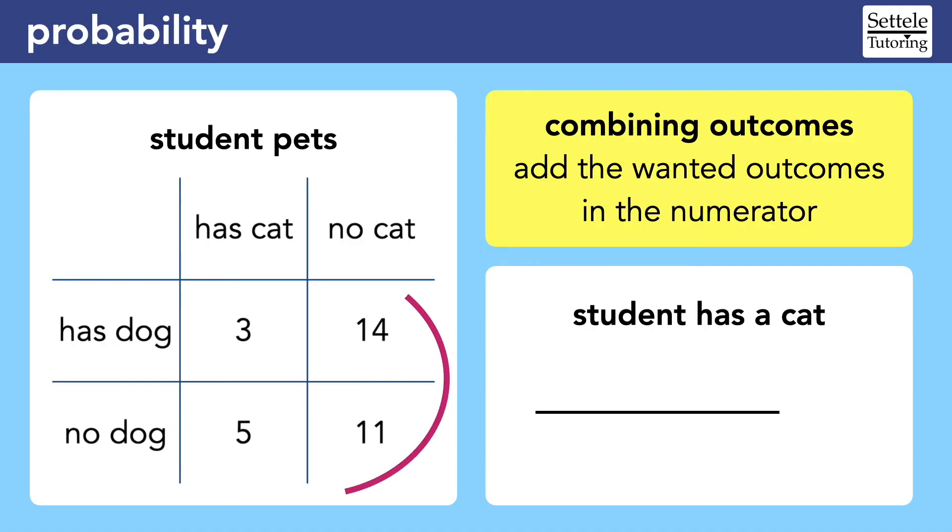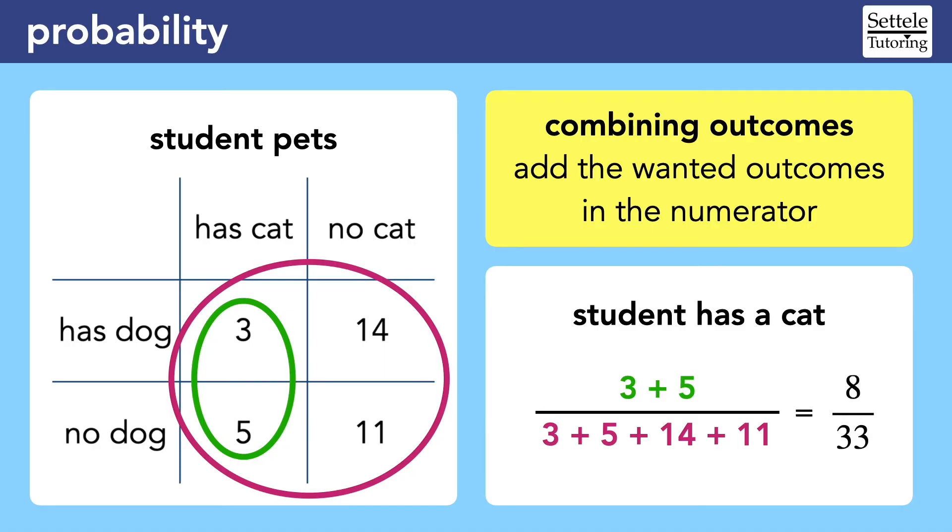The total outcomes is all of the students that are in the chart, so we can add the four numbers: 3 plus 5 plus 14 plus 11. Then we should find all of the students who have a cat. There are 3 people who have a cat and a dog, and 5 people who have a cat but no dog. There are two outcomes that we want, so we're adding those numbers in the numerator. The final probability would be 8 over 33.